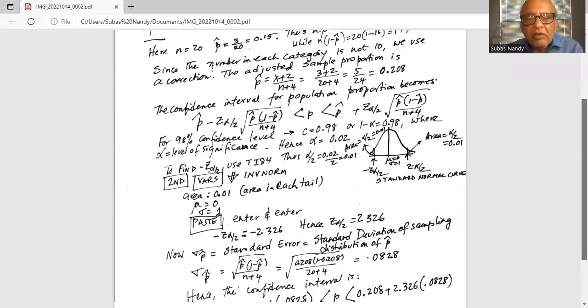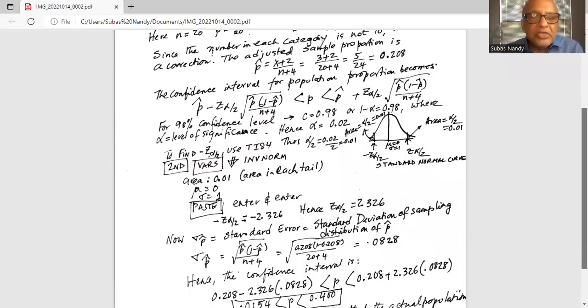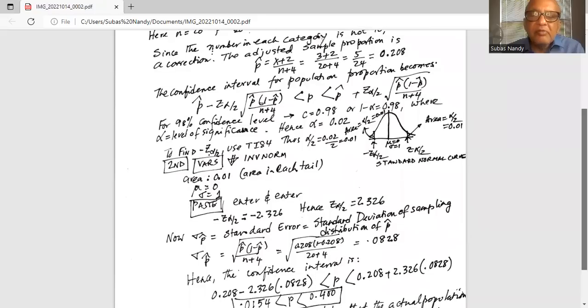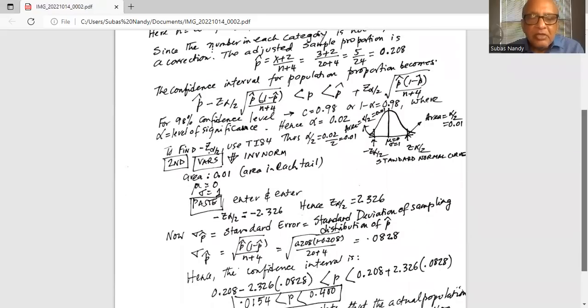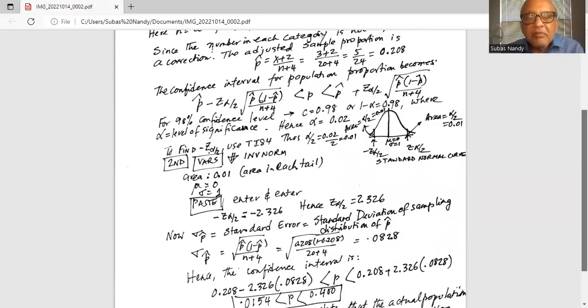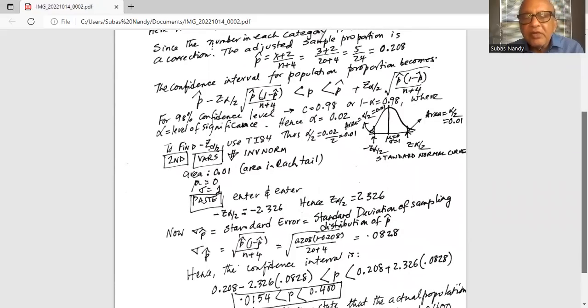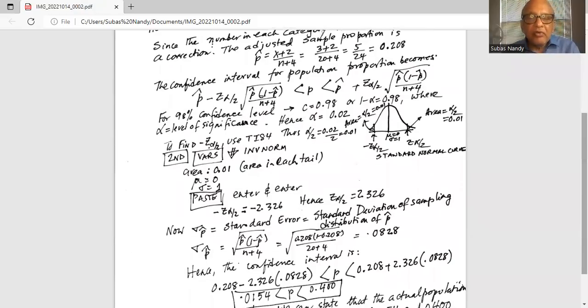Now we need to calculate sigma p-hat, which is the standard error or standard deviation of the sampling distribution of p-hat. Sigma p-hat is given by square root of p-hat multiplied by 1 minus p-hat divided by n plus 4.